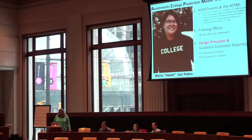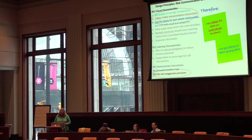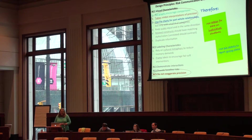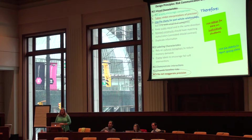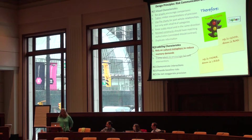This gets us to the design principles. From visual communication research, it's pretty clear that bar graphs encourage comparisons and tables inhibit precision — these are actually things we want when reporting on an individual student with a model that isn't perfect. So it became very clear that the way to go was to use tables when designing reports for individual students, and then use pie charts to report the group data. They're not favored among statisticians, but lay people love them and they're really easy to use.